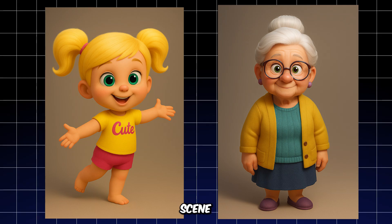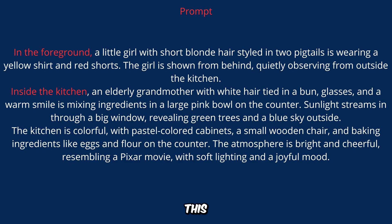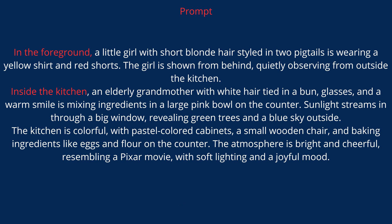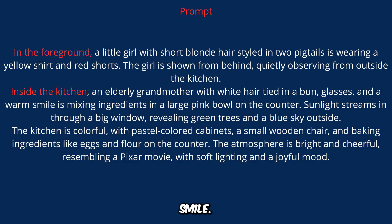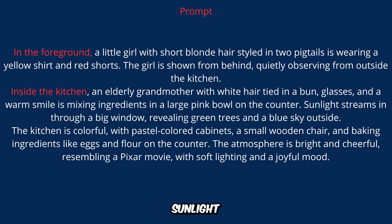Let's move on to creating the second scene and bringing the two characters together. This prompt clearly establishes the subject and characters: a little girl in the foreground observing quietly, and her grandmother inside the kitchen. The action and emotion are shown with the girl simply watching, while the grandmother mixes ingredients with a warm smile. The setting is richly described: a colorful kitchen with pastel cabinets, a pink bowl, eggs, flour, and a wooden chair, all lit by sunlight from a big window that opens to trees and a blue sky.